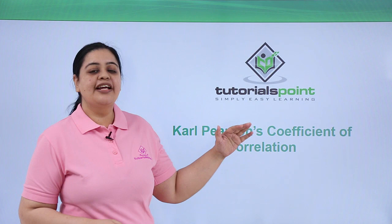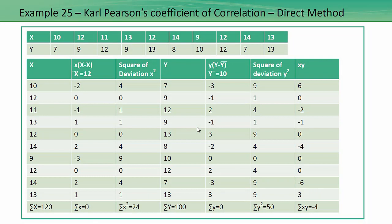Now let's understand what Karl Pearson's coefficient of correlation is and how to calculate it, and then we'll do some problems. We learned about the scatter diagram — this method indicates the direction of correlation but does not give an exact value of magnitude. A mathematical method of measuring the magnitude of linear relation between two statistical series X and Y was given by the statistician Karl Pearson.